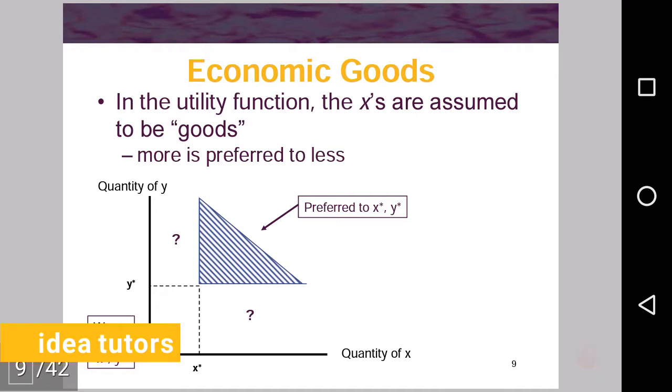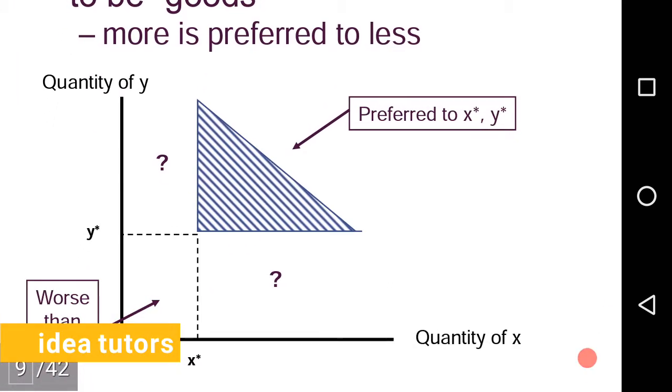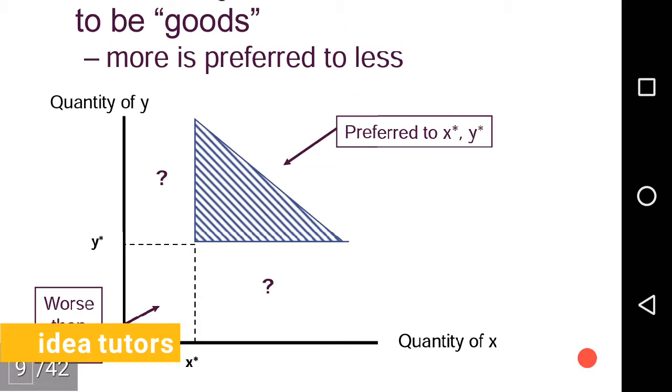In the utility function, the x's are assumed to be goods, and more is preferred to less. Obviously more is preferred to less. As in the figure, we have this bundle x star, y star. X star, y star are the quantities of x and y which are available at this particular point.